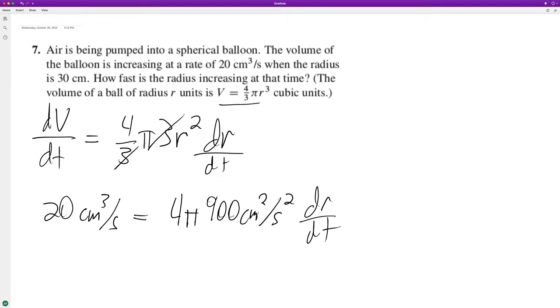Divide through by this. What we end up with is 20 cubic centimeters per second divided by 3600π centimeters squared. The change of radius with respect to time equals...